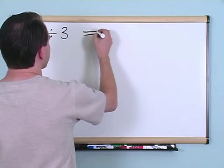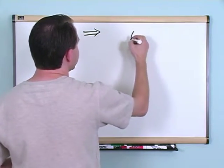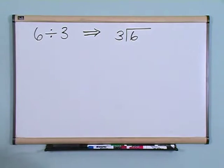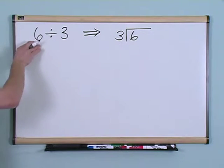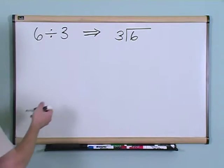Another way that you'll see this problem written is kind of like this. You'll have six underneath this kind of house looking thing, and then you'll have a three here. What does this mean? You're taking six and you're dividing into it three.